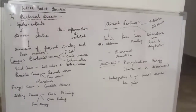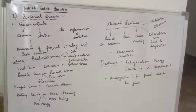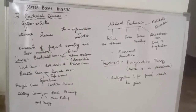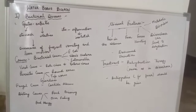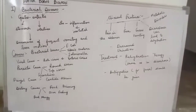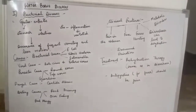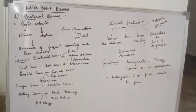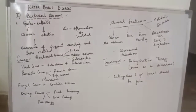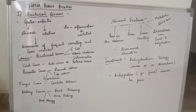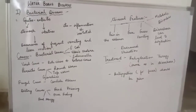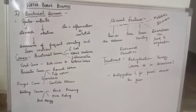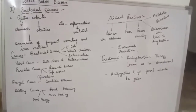Gastroenteritis basically refers to the occurrence of frequent vomiting and loose motions. Like other bacterial diseases, it has common causes similar to waterborne diseases, including bacterial causes, viral causes, parasitic causes, fungal causes, and dietary causes.